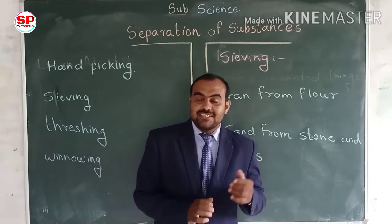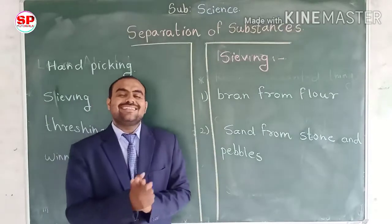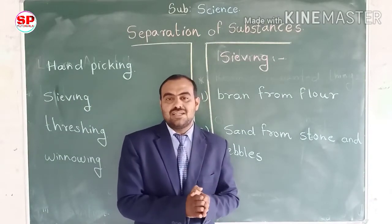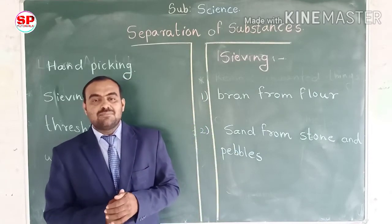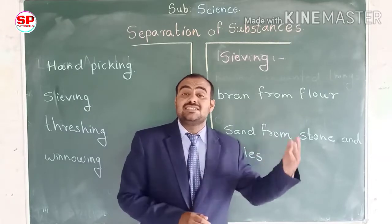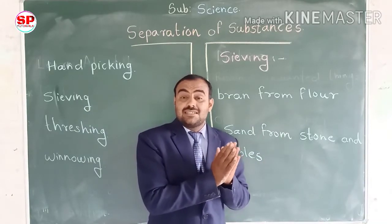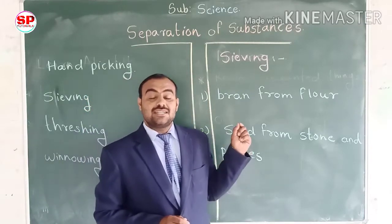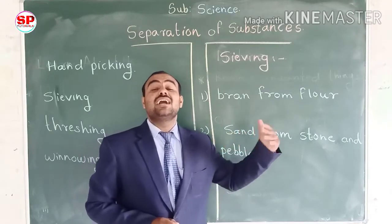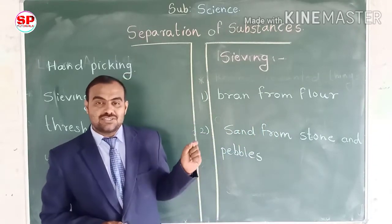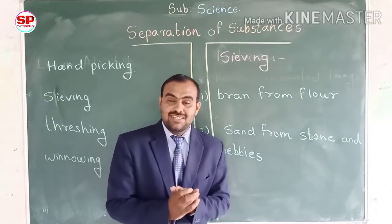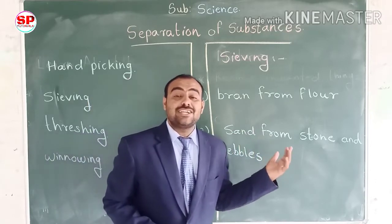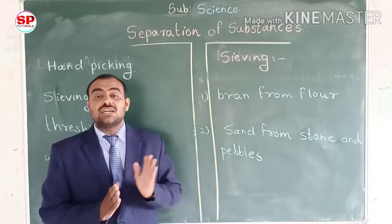We have another method called sieving. In this method, one of the substances in the mixture has a different size. From this method, we are going to remove that substance which has a different size. So that method is called sieving — the method in which substances are removed based on variety of size.